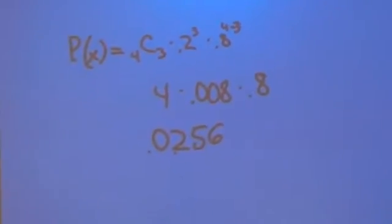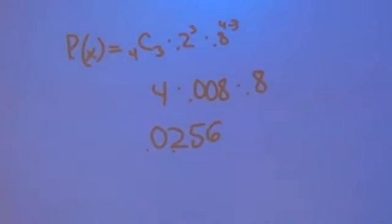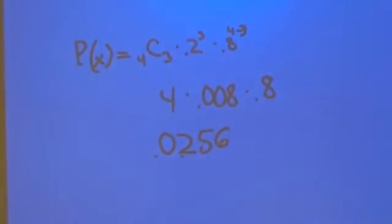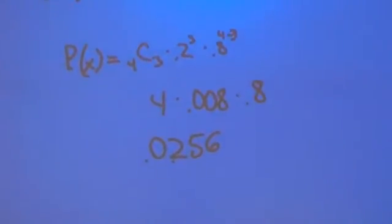An example is the probability of answering 3 out of 4 questions correct. n equals 4, x equals 3, p equals 0.2, and q equals 0.8.